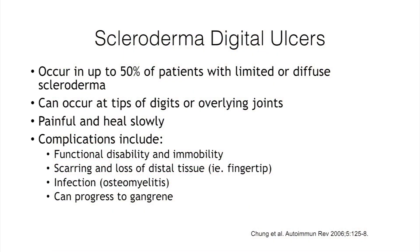All of that goes to say that patients with Raynaud's phenomenon and scleroderma have abnormal blood vessels in their digits, and this puts them at risk for another complication: digital ulcers. These happen in about half of patients with either limited or diffuse phenotype, and they can occur on the fingertips or overlying the joints. They're very painful and heal very slowly, and can cause serious complications including scarring, loss of the distal fingertip, superinfection affecting bone causing osteomyelitis, and in very severe cases tissue death requiring amputation.